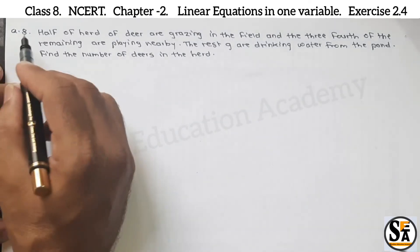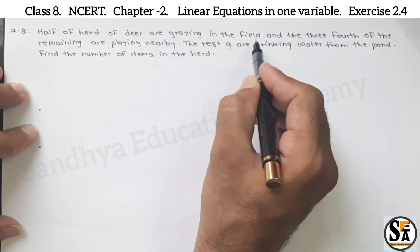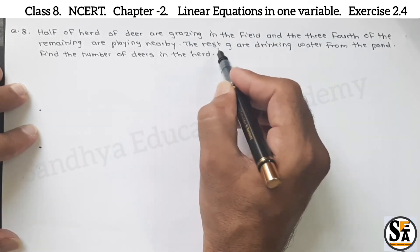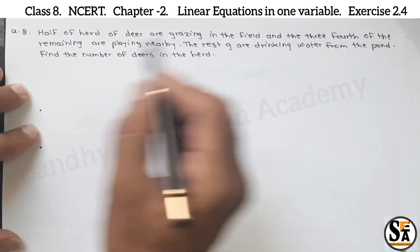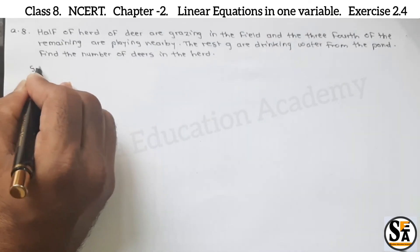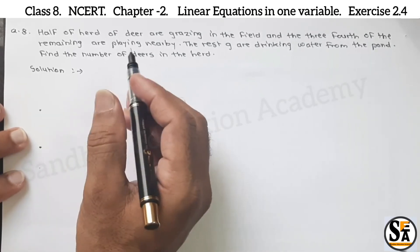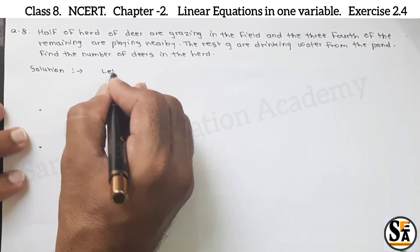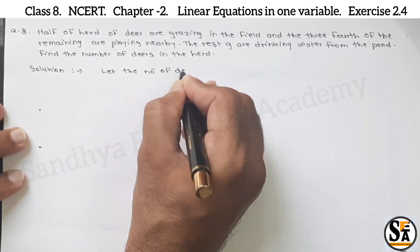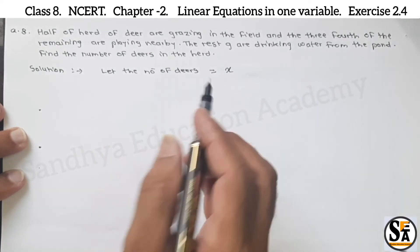Question number 8: half of a herd of deer are grazing in the field and three fourth of the remaining are playing nearby. The rest 9 are drinking water from the pond. Find the number of deers in the herd. We will start our solution. First, we will assume let the number of deers in the herd be x.